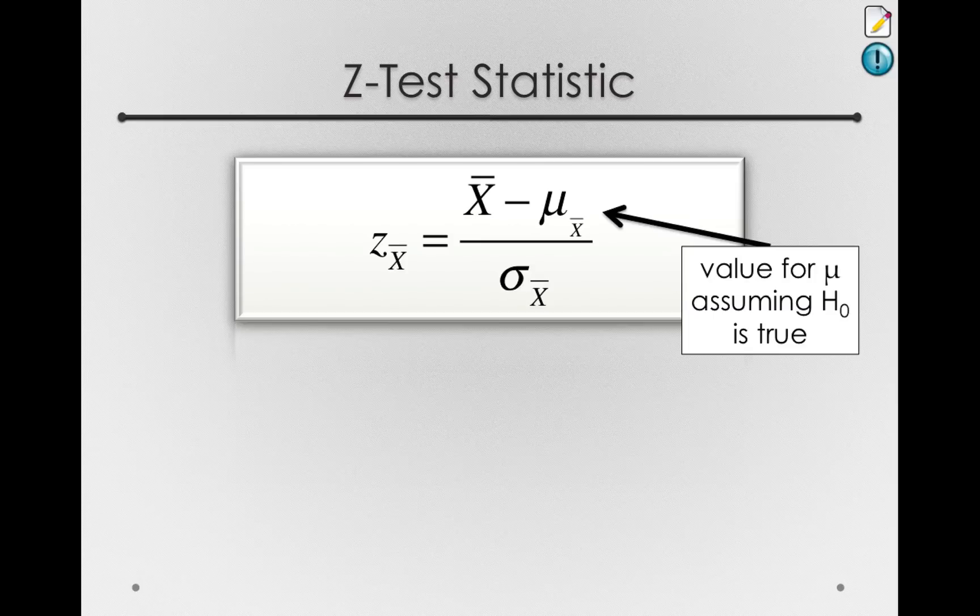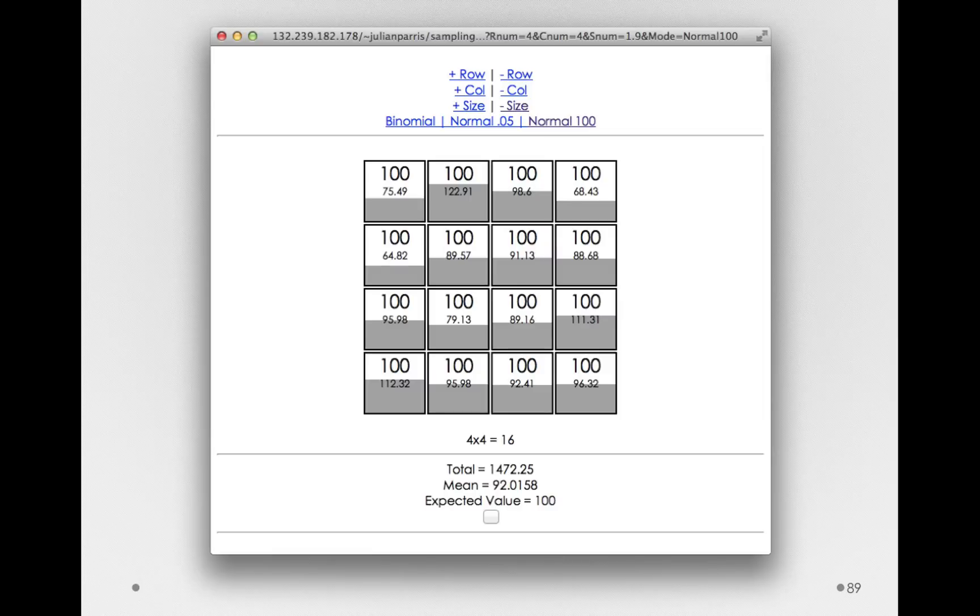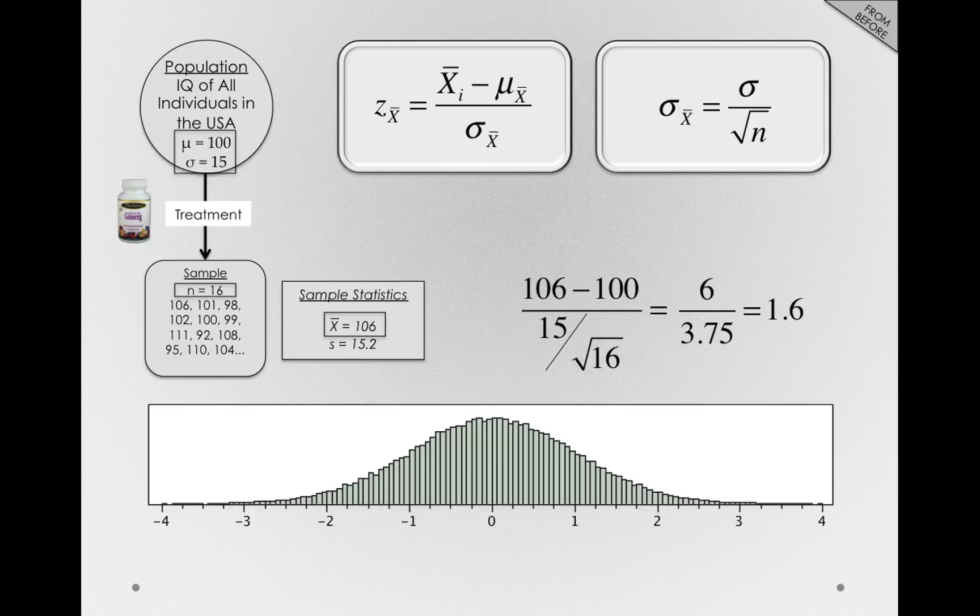So what this test statistic is doing is placing our sample in that distribution of sample means, assuming the null hypothesis is true. And assuming the null hypothesis is true just means we're taking samples at random. And we know a lot about the characteristics of the sampling distribution if we're simply taking random samples. This is what we saw before.